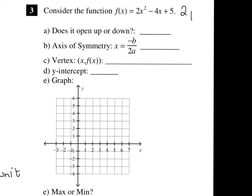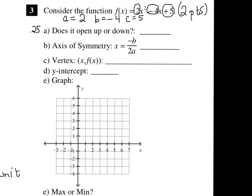This problem is going to be worth 2 points on the quiz, so each of those letters will be worth a quarter point — 0.25 for each of them. The first thing we have to do is write down what A, B, and C equal. So A is 2, B is negative 4, and C is positive 5. Now I can use those and plug them into the formulas where I need them. Does it open up or down? Well, we just have to look at A.